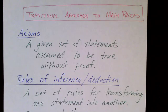What's an axiom? An axiom is a statement that is assumed to be true without proof. So we start with a given set of axioms and we assume that these statements are true and we don't provide a proof of these statements.